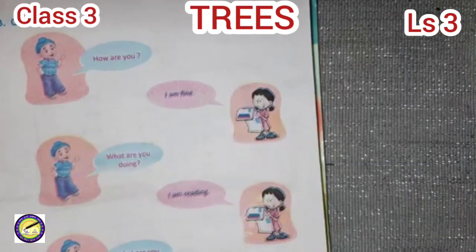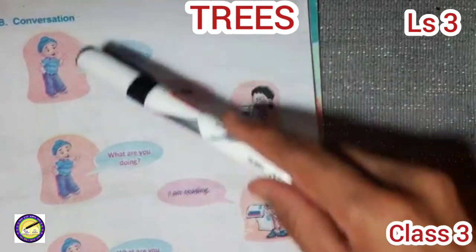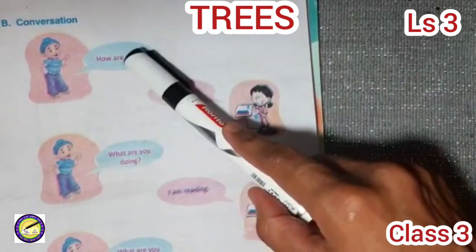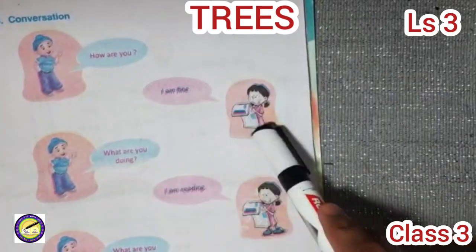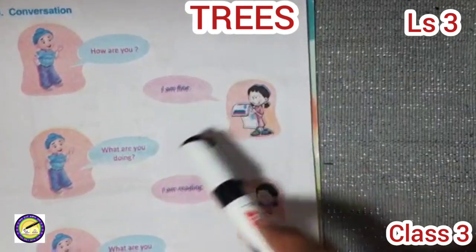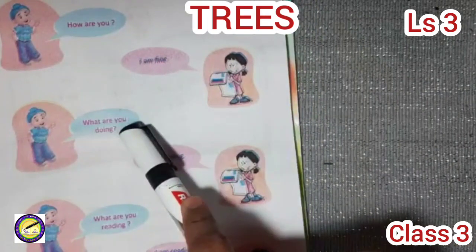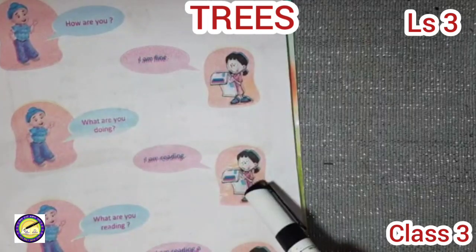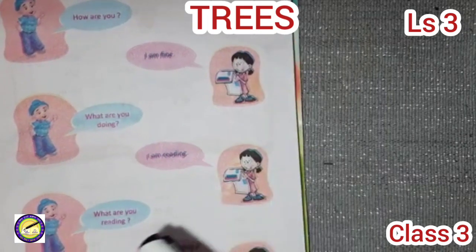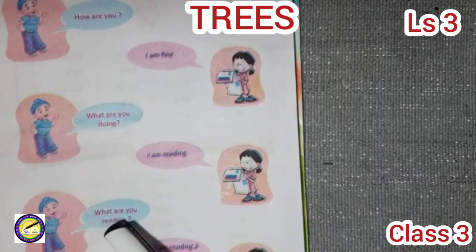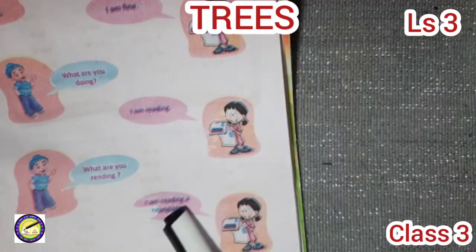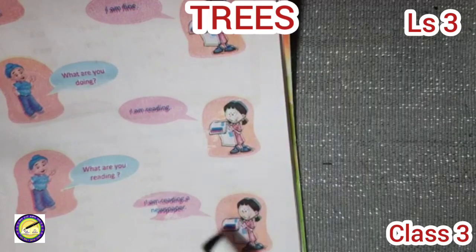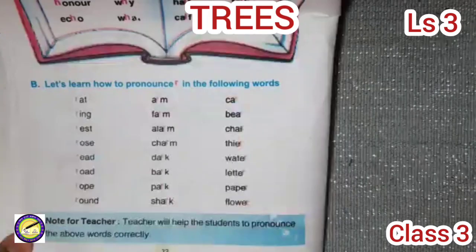On page number 31, there is a conversation part. Boys are asking a girl: 'How are you?' — the girl answers 'I am fine.' Next: 'What are you doing?' — 'I am reading.' Last question: 'What are you reading?' — 'I am reading a newspaper.'